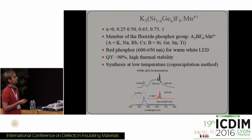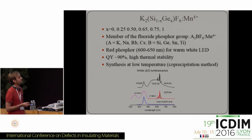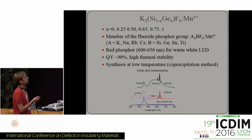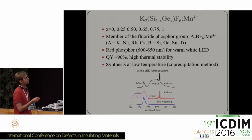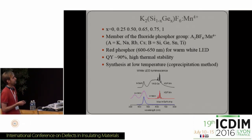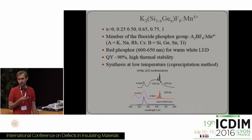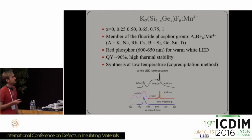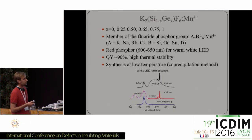The full formula for our compound group is written at the top. We have investigated a whole series of samples where we gradually replaced silicon by germanium. Those compounds are members of the fluoride phosphor group — they are all red phosphors and are intended to be used for improving the color rendering index of warm-white LEDs.